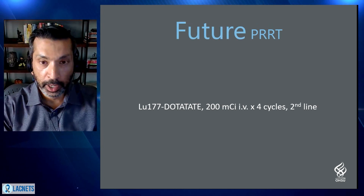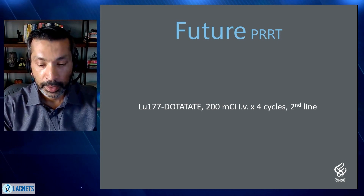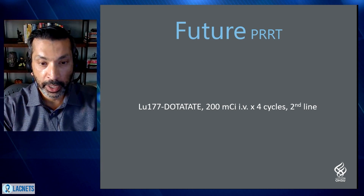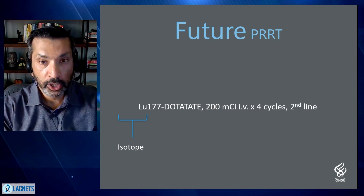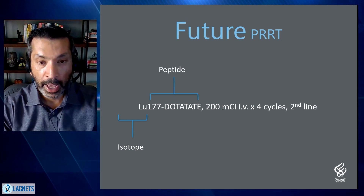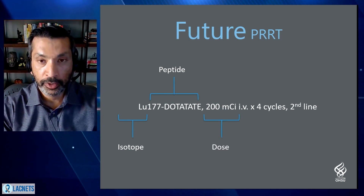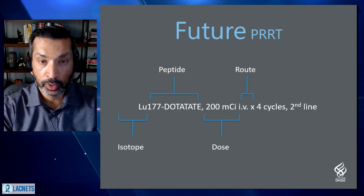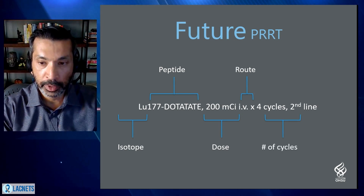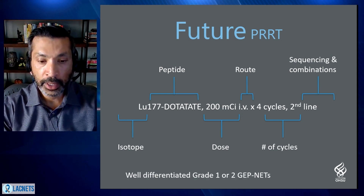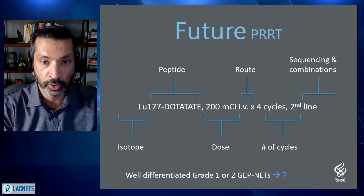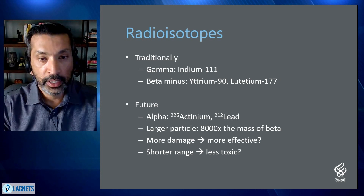When we look at the future of PRRT, interestingly, every single aspect of this treatment is being looked at for improvement. The isotope itself, the peptide dotatate, the dosing of 200 millicuries, the intravenous administration route, the number of cycles, and the fact that this is second-line treatment — all of these are being investigated in various clinical trials. Even the indication of well-differentiated grade one or grade two gastroenteropancreatic neuroendocrine tumors may change in the future.